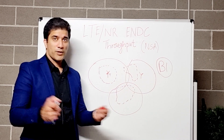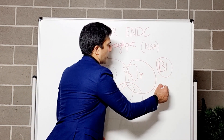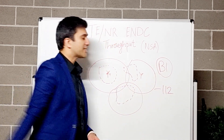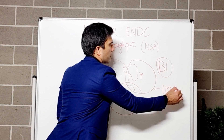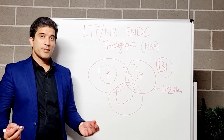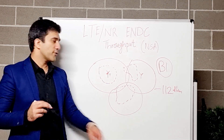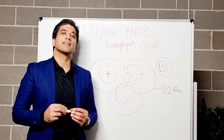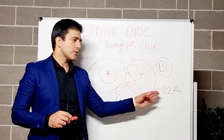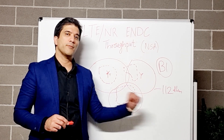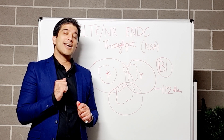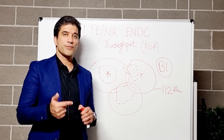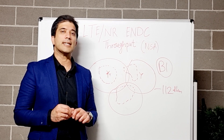For example, if you have set your B1 threshold to -112 dBm, then as soon as the NR coverage goes better than -112 dBm, your UE will attempt to go onto the NR cell and add it as a secondary cell. This is how it happens in the NSA.